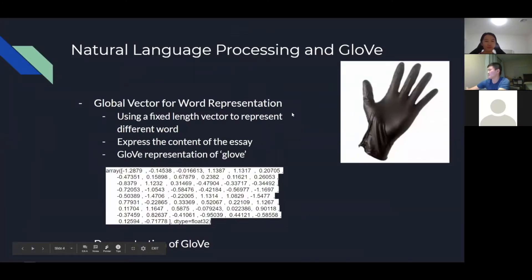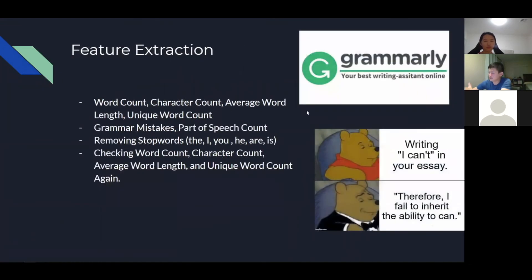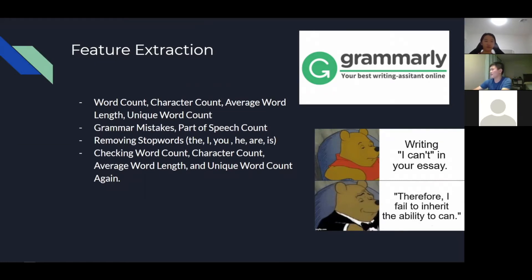Now we look at how the neural network evaluates a student's ability to write. We calculate word count, character count, average word length, and unique word count to evaluate command of language. It's not perfect, but gives a good idea of the overall essay quality. We also evaluate grammar mistakes and part-of-speech count — for example, never using adjectives in an essay is a bad sign.